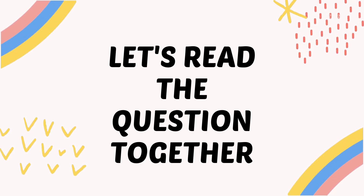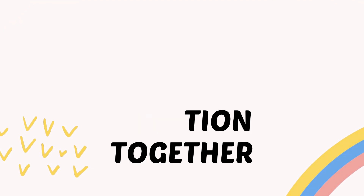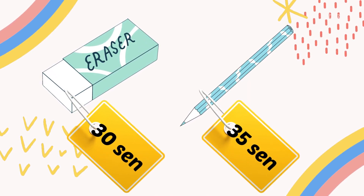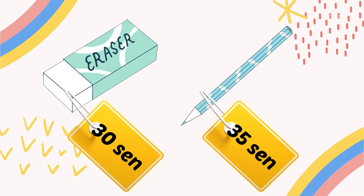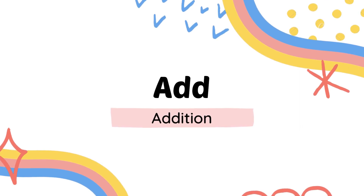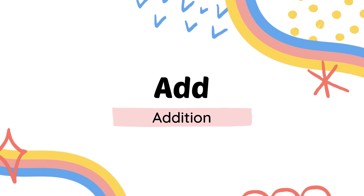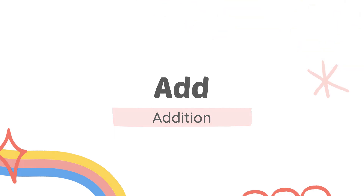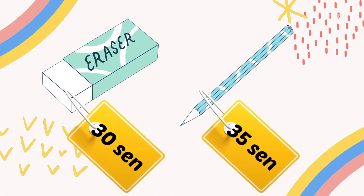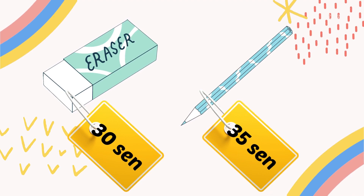You're going to read the question together and we're going to look at the pictures first. Look here. We have an eraser and a pencil. The eraser price is 30 cents and the pencil price is 35 cents. You will need to add the two prices of two items. Here, add means addition. We have 30 cents for the eraser and 35 cents for the pencil.